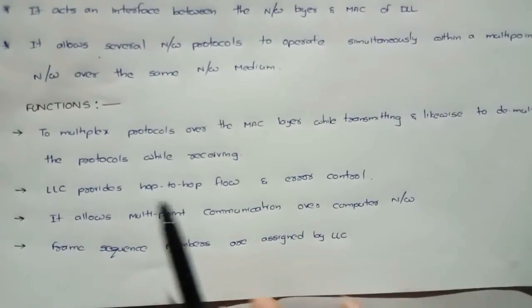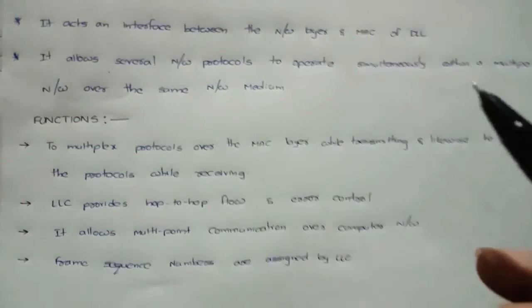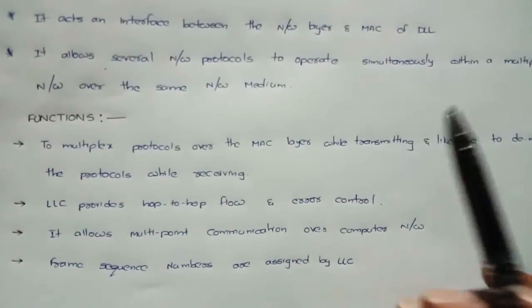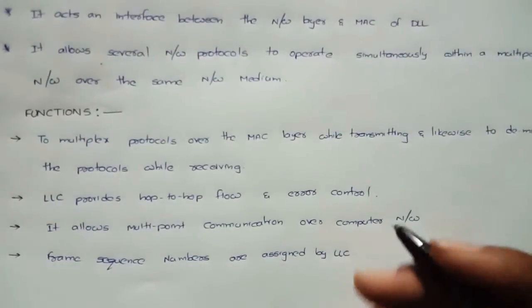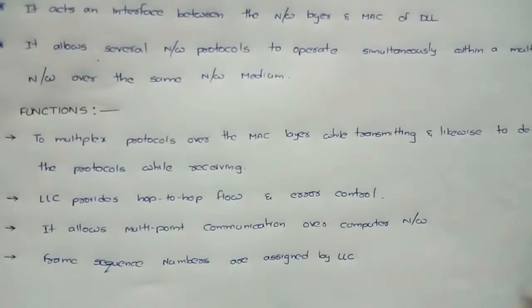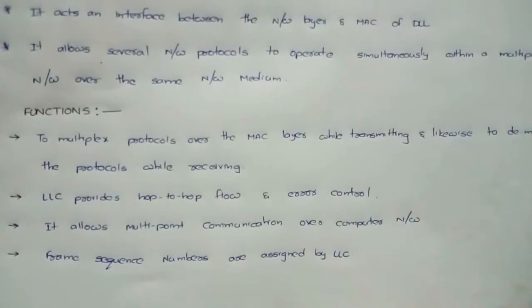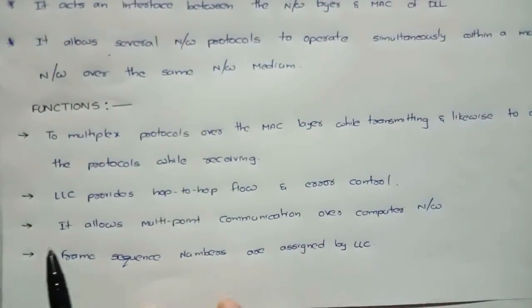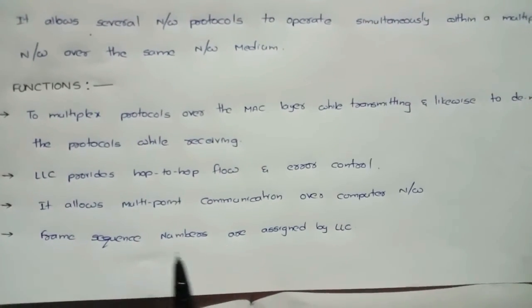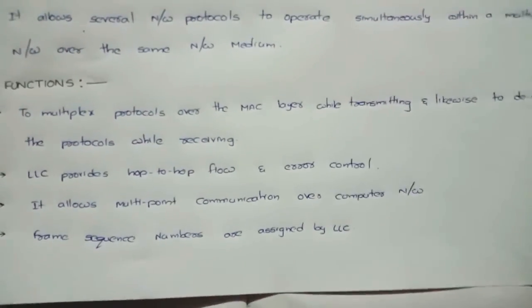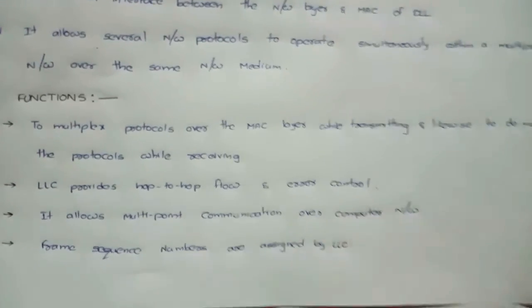The LLC layer provides hop-to-hop flow and error control. While transmitting data, errors can occur due to noise in the communication channel. The LLC sub-layer is used to control that flow and reduce errors. It also allows multiple communications over the computer network, and frame sequence numbers are assigned by the LLC. In the Data Link Layer, data is transferred as frames.